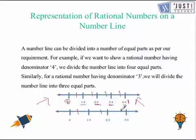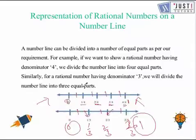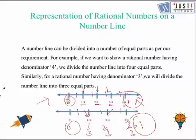Here, the number line is divided into three equal parts. That means we find one over three, two over three, and three over three, which is the same as one. So these rational numbers lie between zero and one.